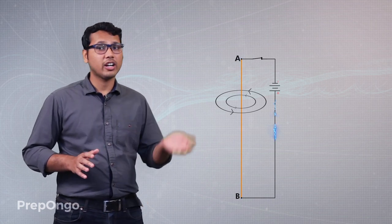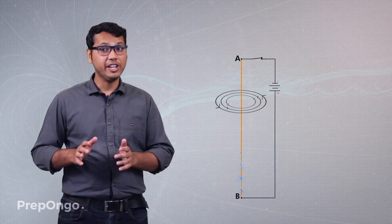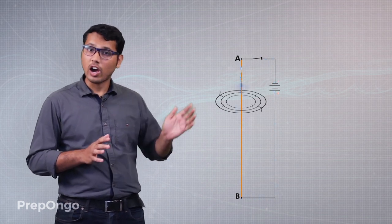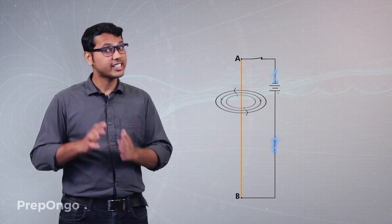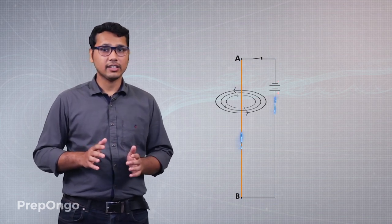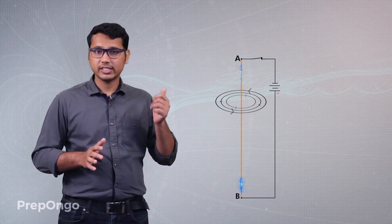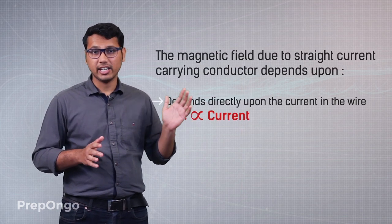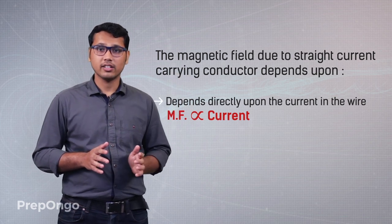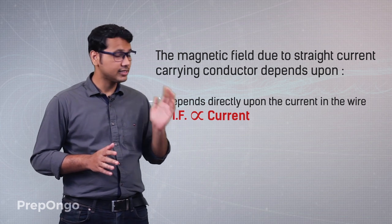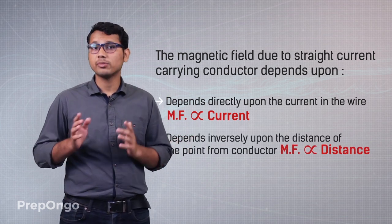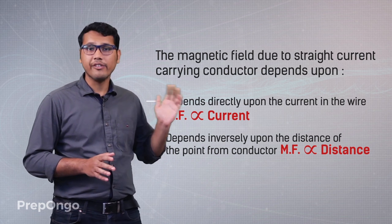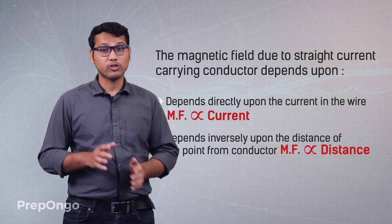The strength of this magnetic field depends on some factors. If we increase the amount of current through this conductor, the magnetic field increases. As we had also seen in Oersted's experiment, if we move away from the wire the strength of the magnetic field decreases. So the strength of the magnetic field due to a straight current-carrying conductor depends directly on the current, and it is inversely proportional to the distance of the point from the wire.